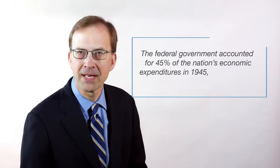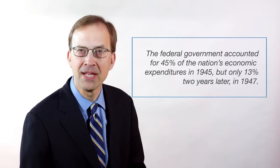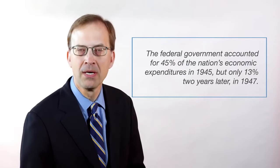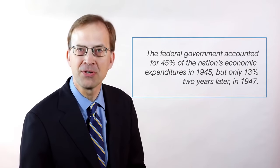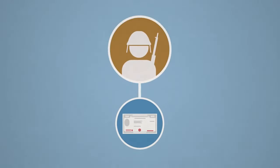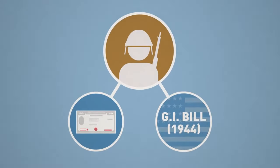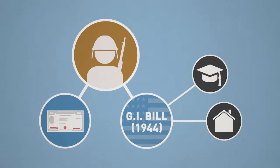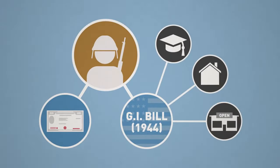The federal government accounted for 45% of the nation's economic expenditures in 1945, the last year of the war, but only 13% two years later in 1947. Aside from the war bond savings, returning soldiers also had spending power via the GI Bill, which provided funds for investing in the future, such as higher education, home mortgage loans, and small business start-up costs.